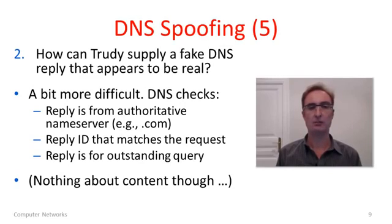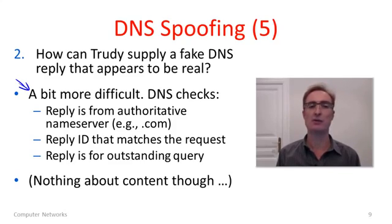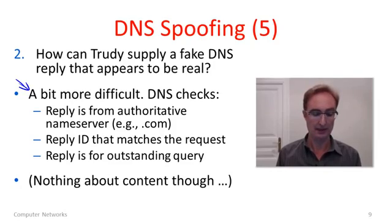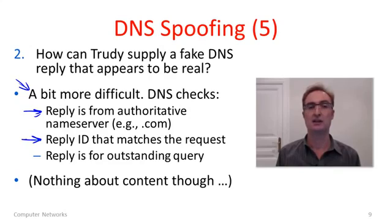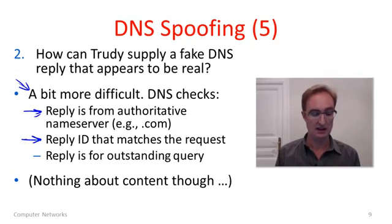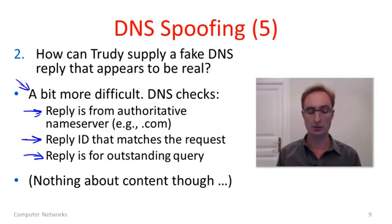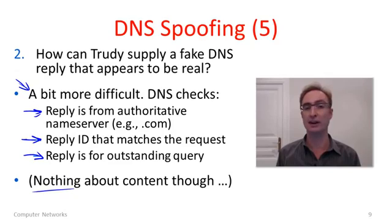The second question: how can Trudy supply a fake DNS reply that looks so good it's taken to be real? This is more difficult because the local name server, when it gets the reply, is going to do some number of checks. One check is looking at the IP address — it should be from one of the authoritative name servers from whom we were expecting a reply. Another check is that replies and queries have an ID number, and these should match between the query and the reply — this is how a name server pairs them together. Name servers also only accept responses when there is a query outstanding. Note that there's nothing actually about the content of the binding — the name server doesn't know, it will just accept any reasonable answer.